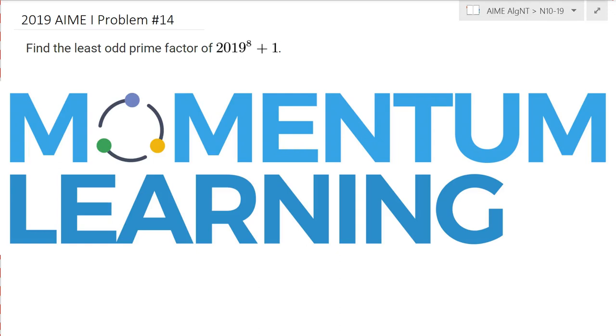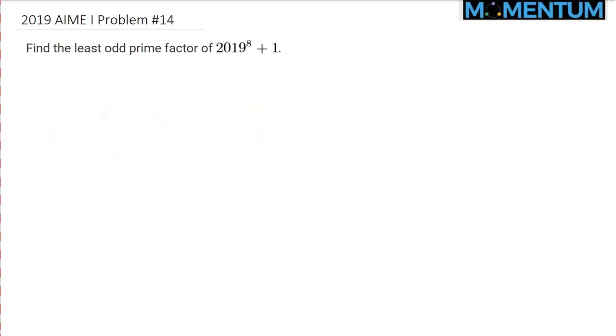This is 2019 AIME Problem number 14. Here's a view of this number theory problem. We would like to find the least odd prime factor of the following expression: 2019 raised to the 8th power plus 1.